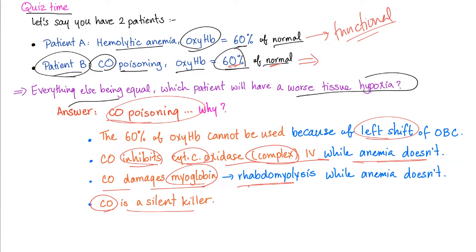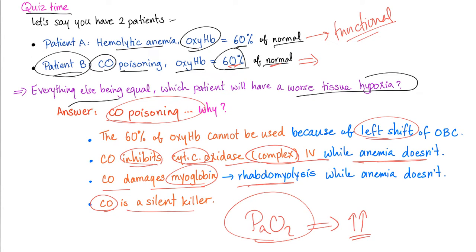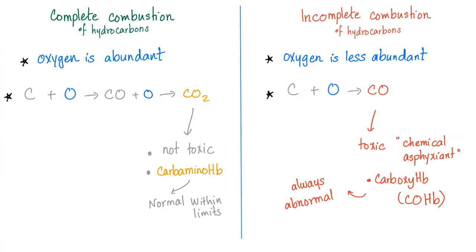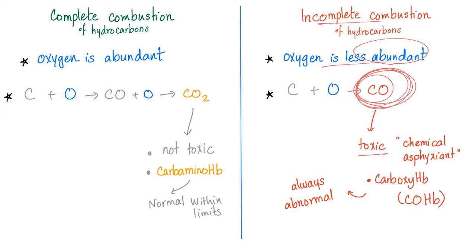Carbon monoxide is a silent killer. You will die quickly and peacefully without waking up, because your PaO2 is normal, and low PaO2 is a strong stimulant for your respiratory center to hyperventilate and wake you up. You will never wake up because of CO, since PaO2 is normal. In brief, when oxygen is less abundant, there is incomplete combustion, CO results, and CO is toxic — a chemical asphyxiant.